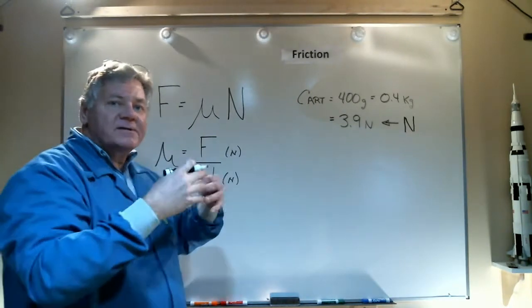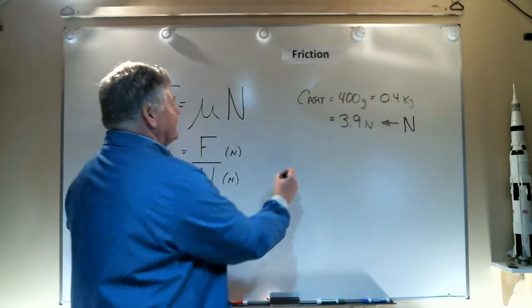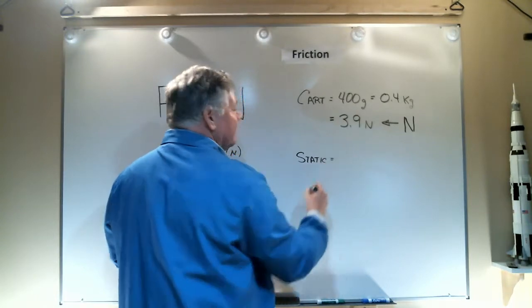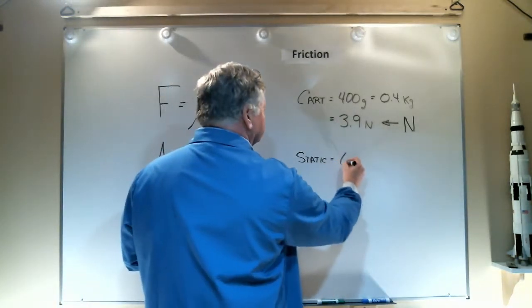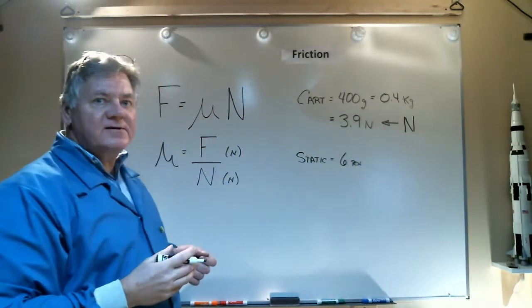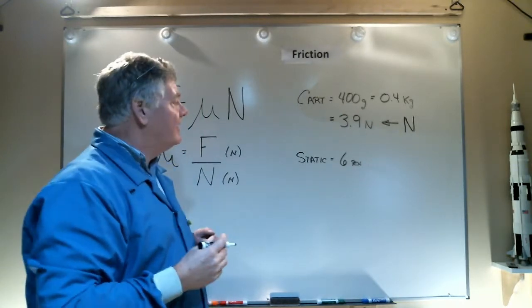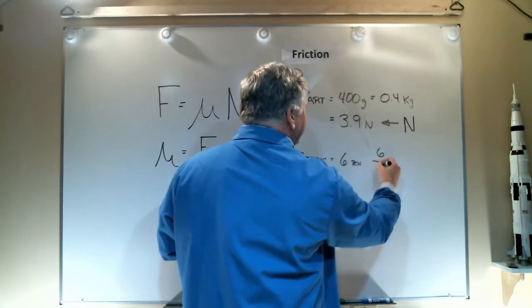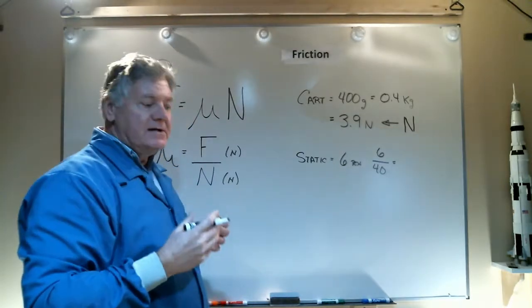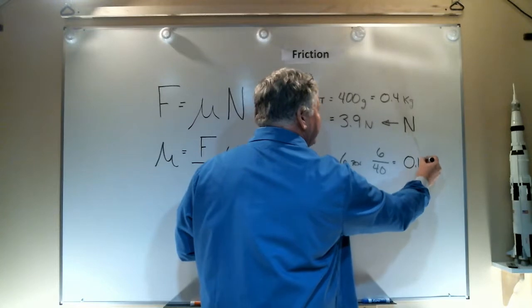In the experiments I measured the force needed to break the static friction and the force needed to overcome the dynamic friction. For static, that took six pennies. That's not a good force measurement, so I'm going to convert that over to newtons. From earlier experiments I realized there's 40 pennies per newton, so if I divide 6 by 40, I can get that force in newtons. That comes out to be 0.15 newtons.